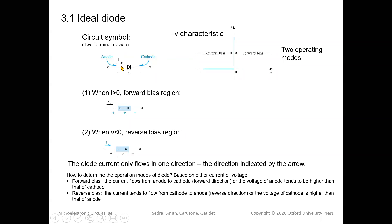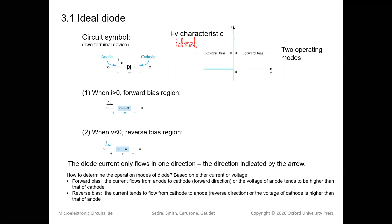We define the positive direction of current as flowing from anode to cathode — from left to right. The voltage is defined as anode minus cathode. This is the IV characteristic of the ideal diode. The vertical axis is current and the horizontal axis is voltage, so this IV curve describes the relationship between current and voltage of the diode.